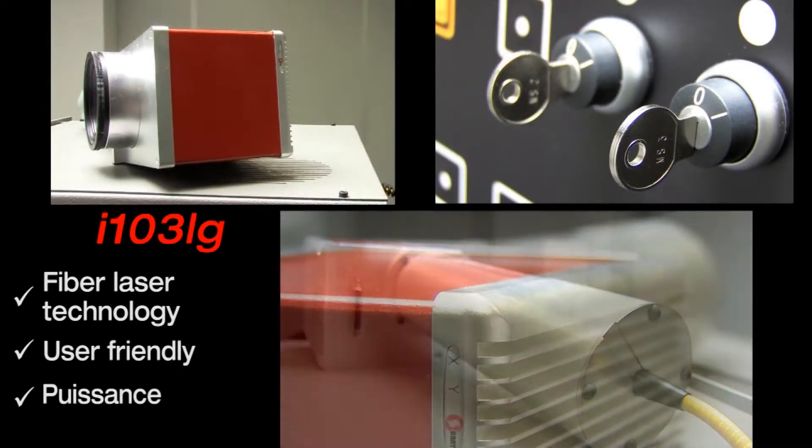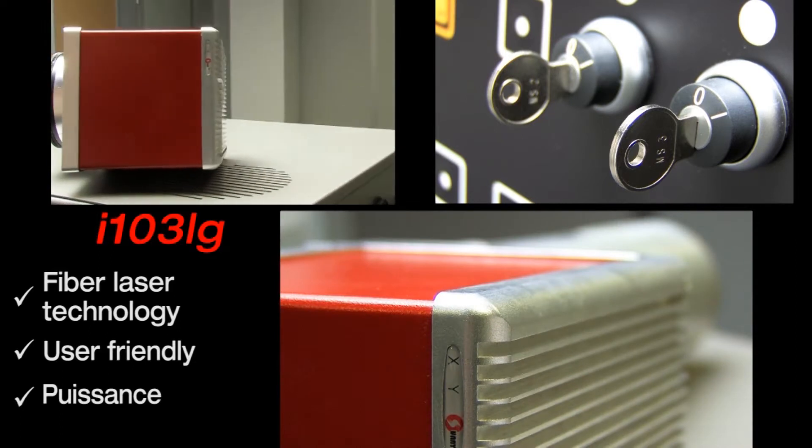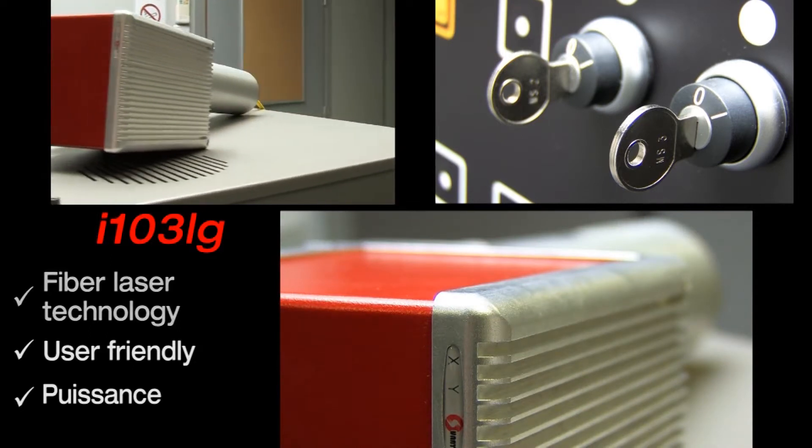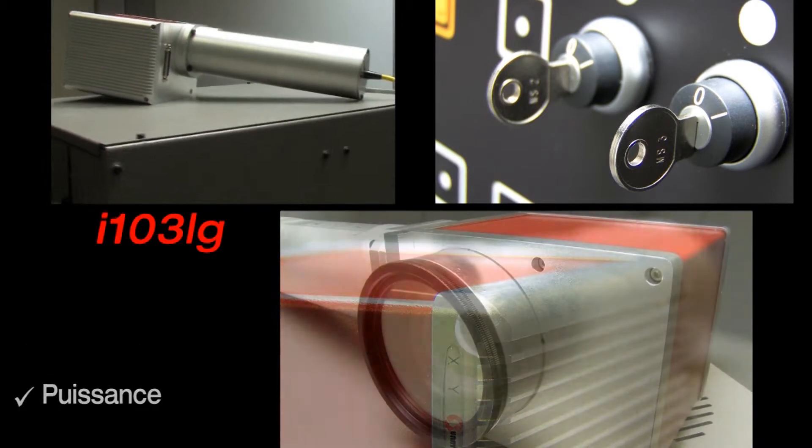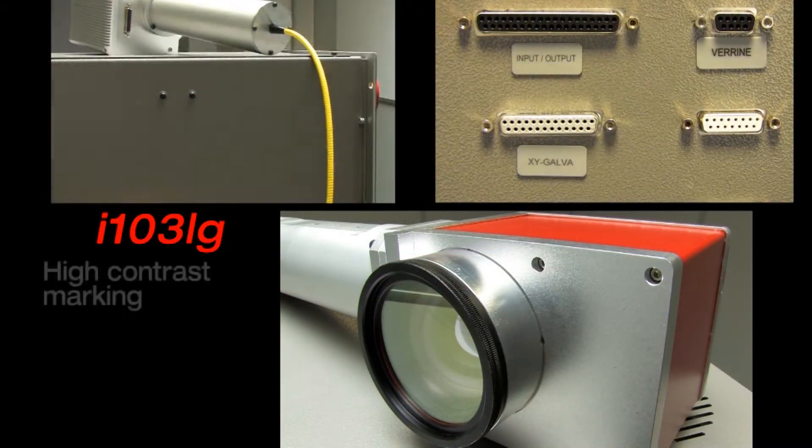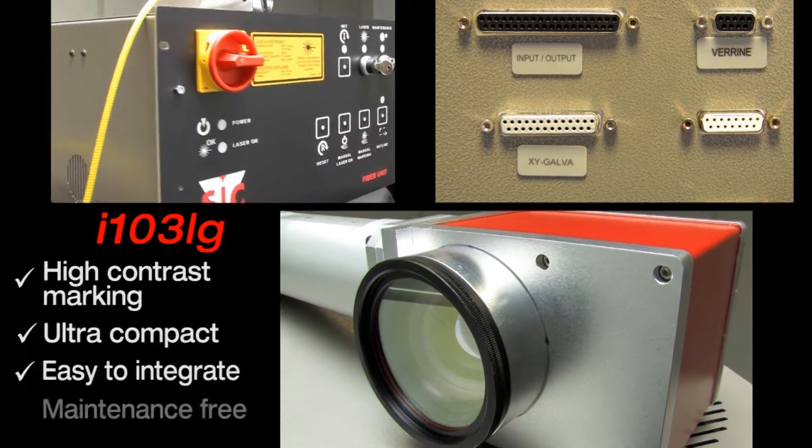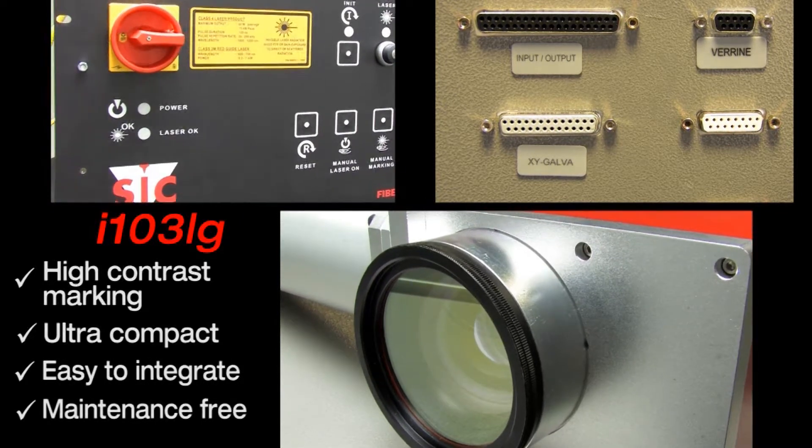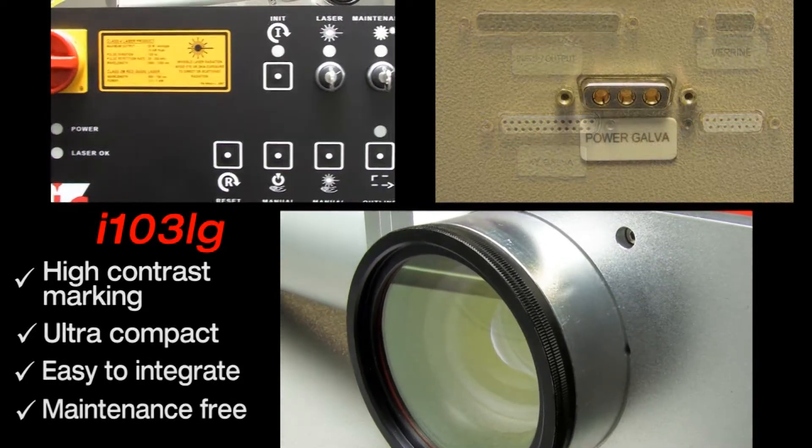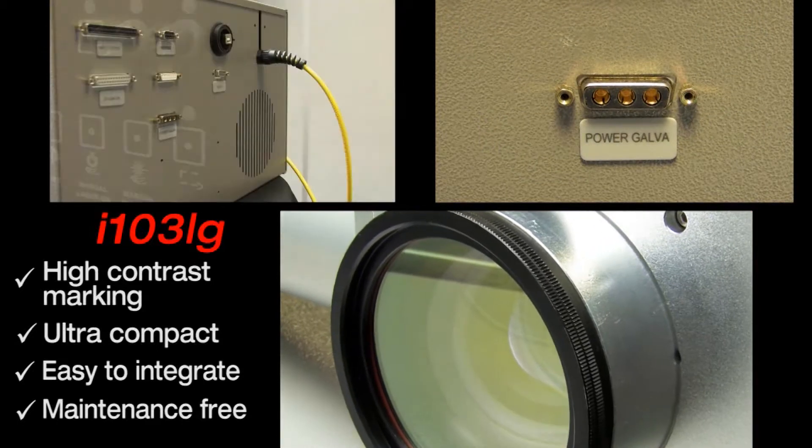It is an ideal machine for integration in a higher rate series manufacturing process where speed and accuracy are essential, built with reliable components and equipped with high-end software. The i103LG generates a beam for perfect marking.